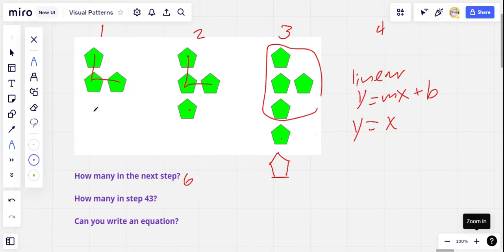So in step one, x is one. So this is predicting y equals x would predict there's one pentagon here. Well, in our starting point, we've got the one, but we've got two more. So we have to add two more to get to three. So in our equation, it would be y equals x plus two.